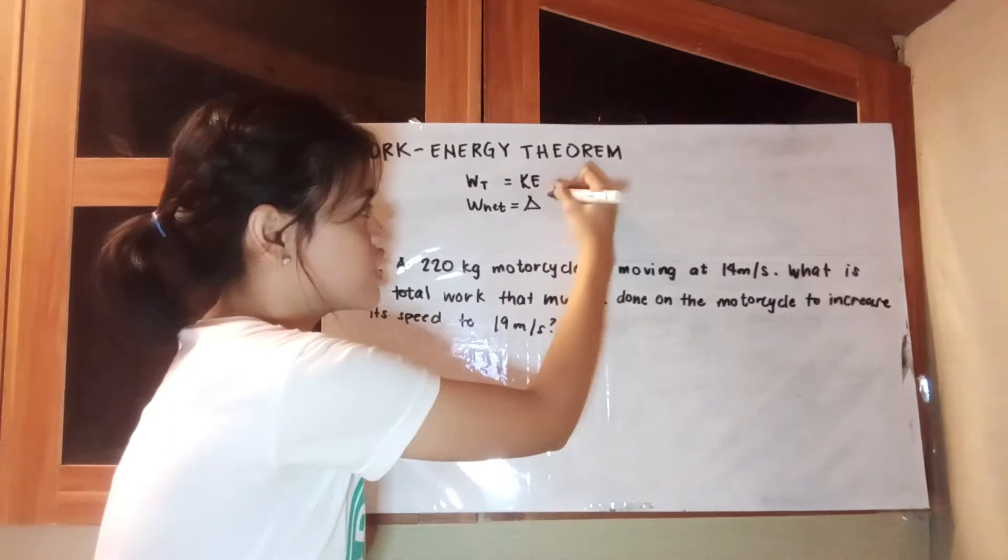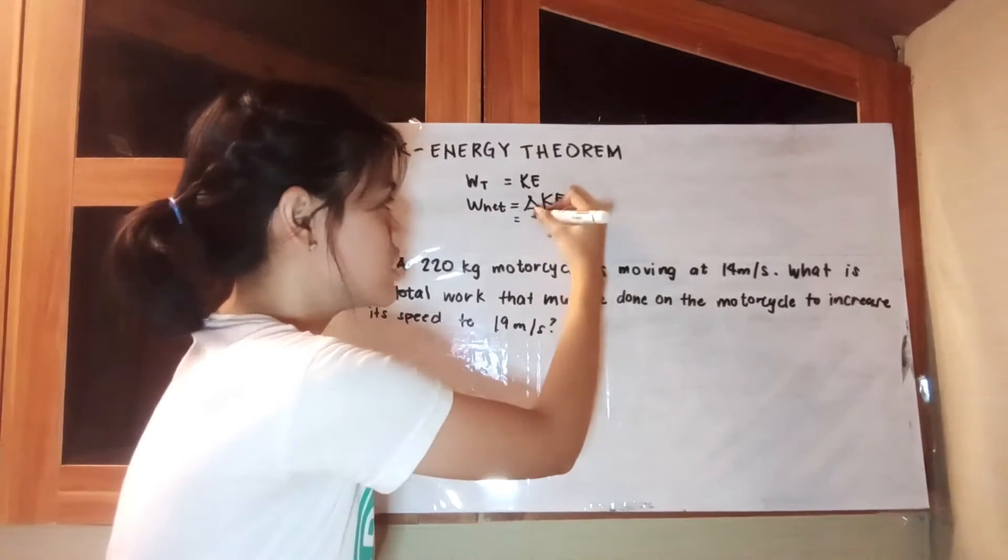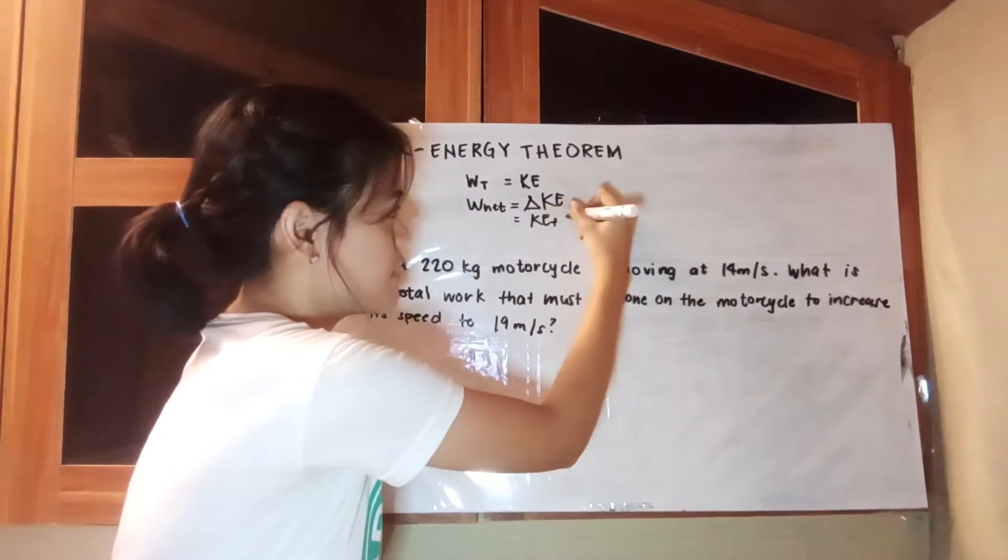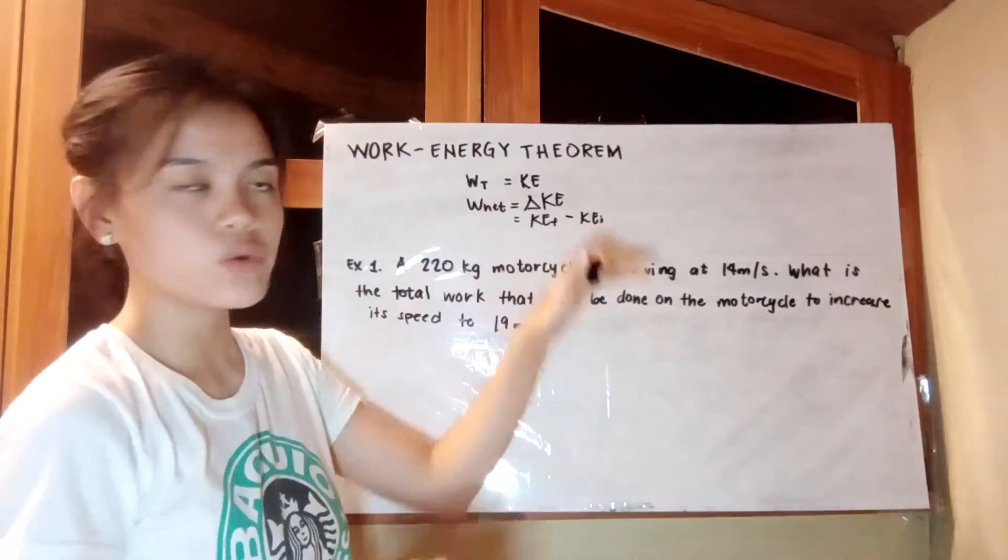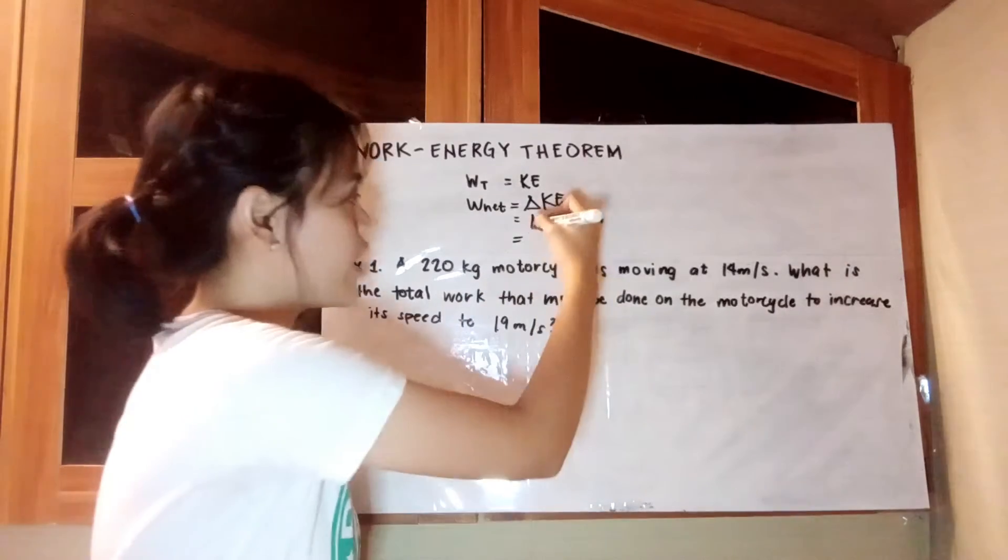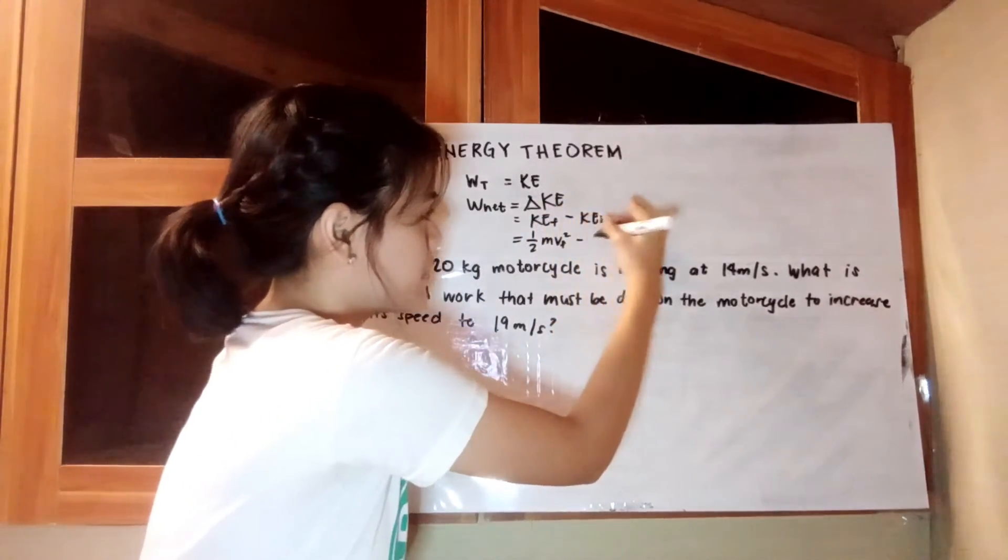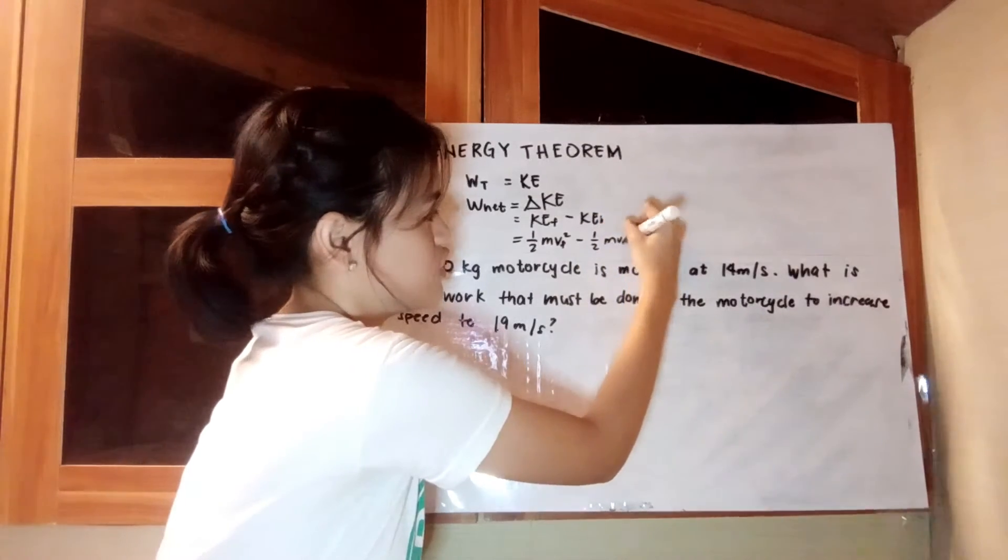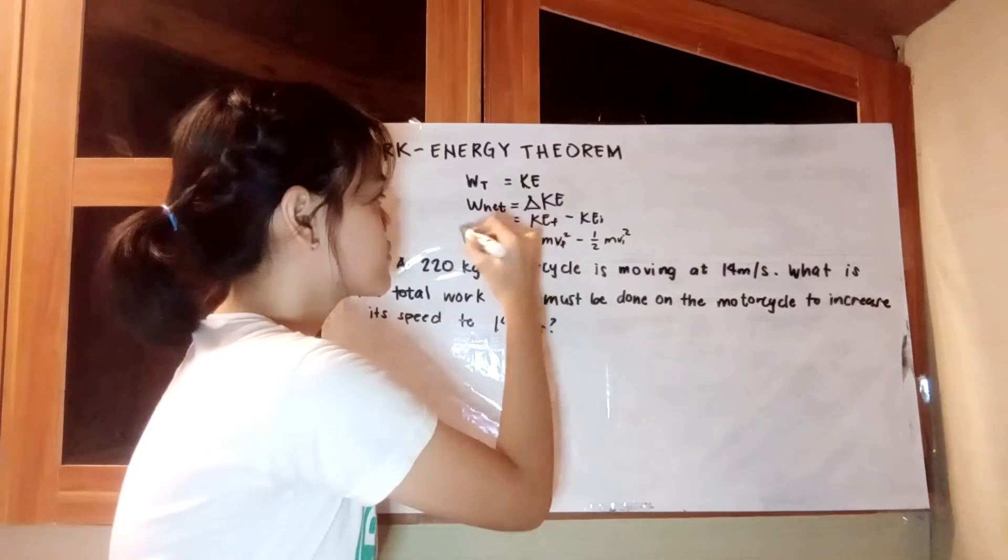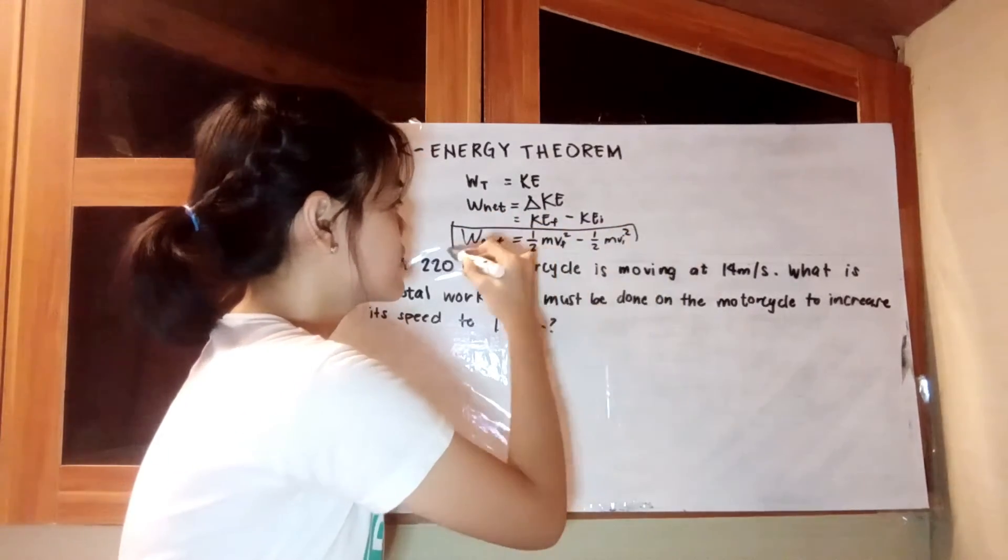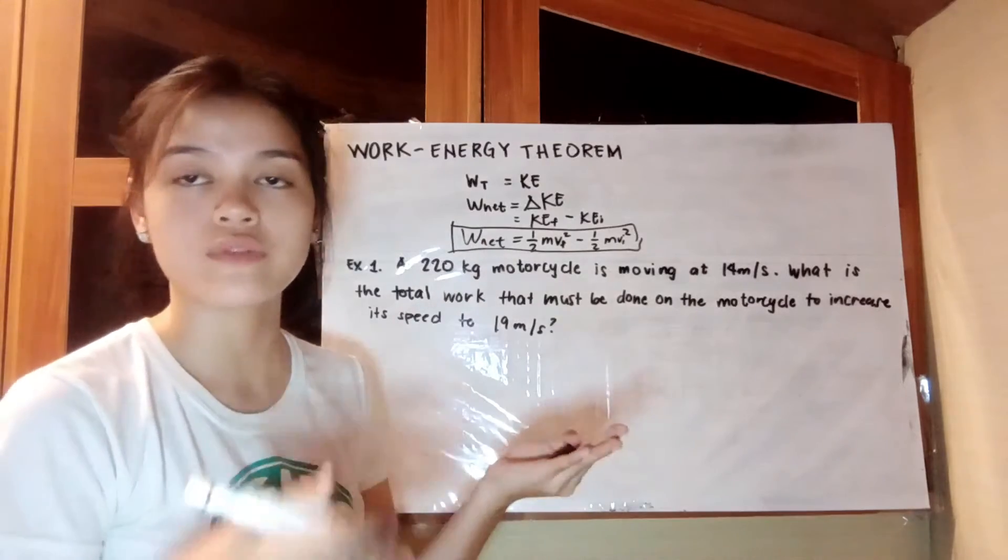We all know that the change in kinetic energy is KE final minus KE initial, and these have a formula of 1/2 m v_final squared minus 1/2 m v_initial squared. This formula can be used because work is equivalent to kinetic energy.